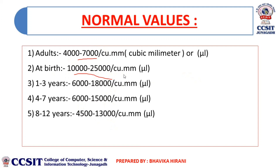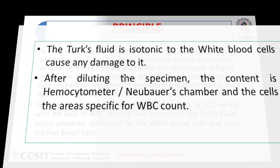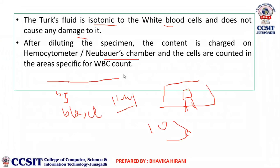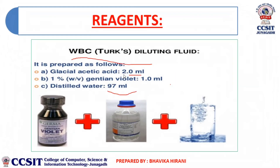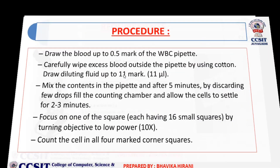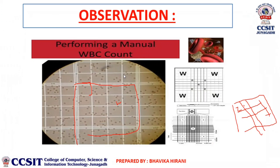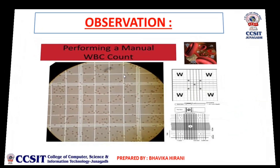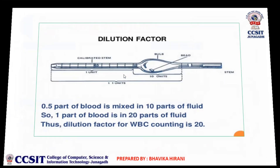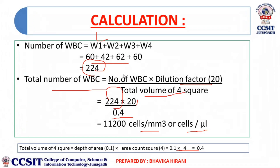Calculation: total the cells counted from all four squares. Multiply the total count by 4 (for depth correction) and apply the dilution factor. The result gives the Total WBC Count per microliter of blood. Write the result as: Total Count of WBC is blank in blood sample. Check whether the answer falls within the normal range of 11,200 to 25,000 per microliter. If the answer is in the normal range, the person has no disease.